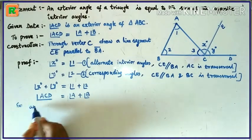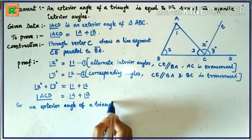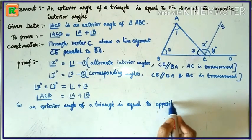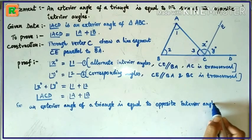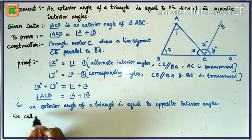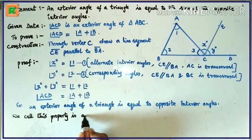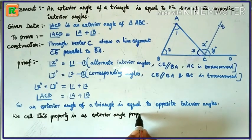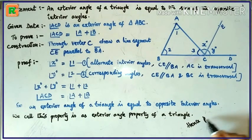So, an exterior angle of a triangle is equal to the sum of the opposite interior angles. We call this property the exterior angle property of a triangle. Hence proved.